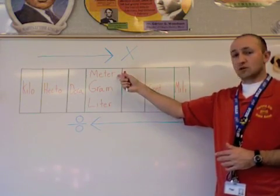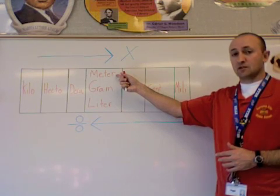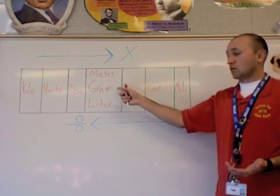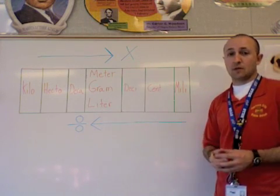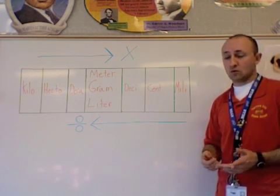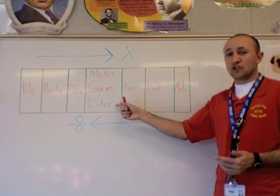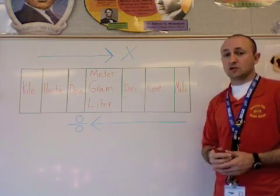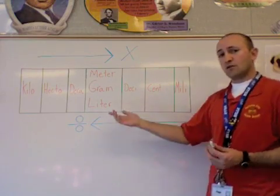We use meters as our base if we want to measure length. We use grams as our base in measuring mass or weight, and we use liters as our base for measuring capacity.